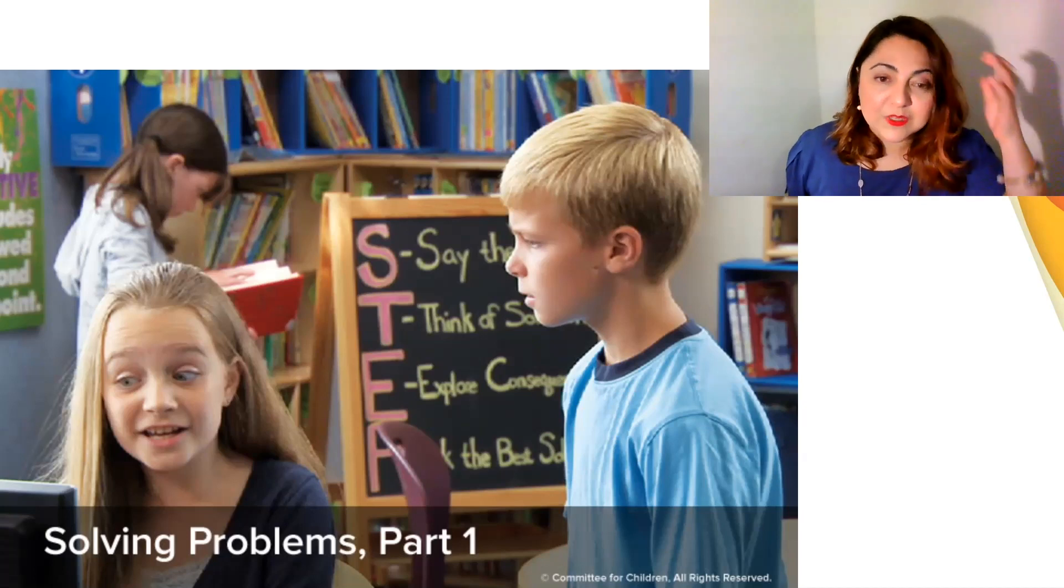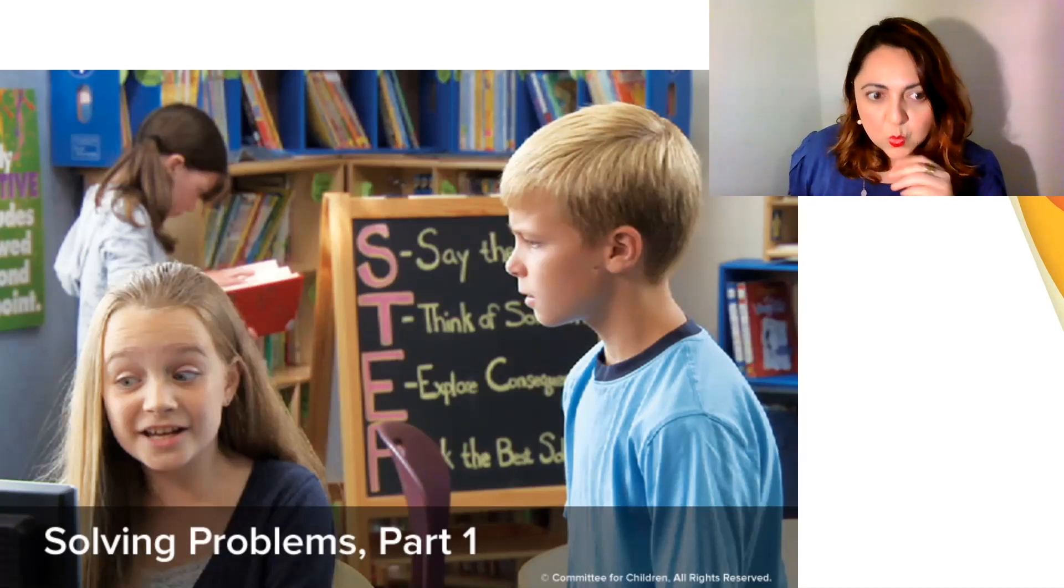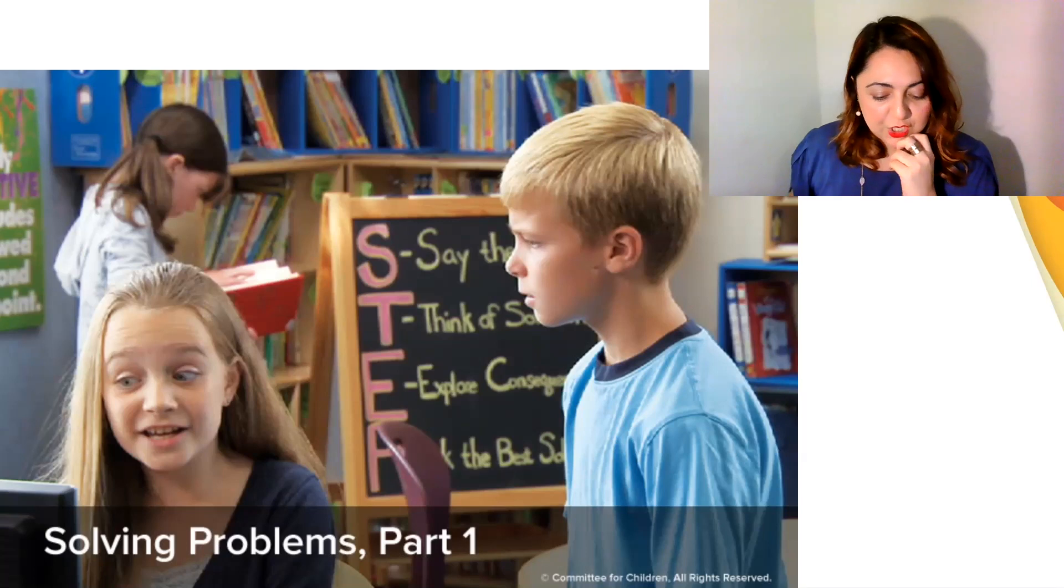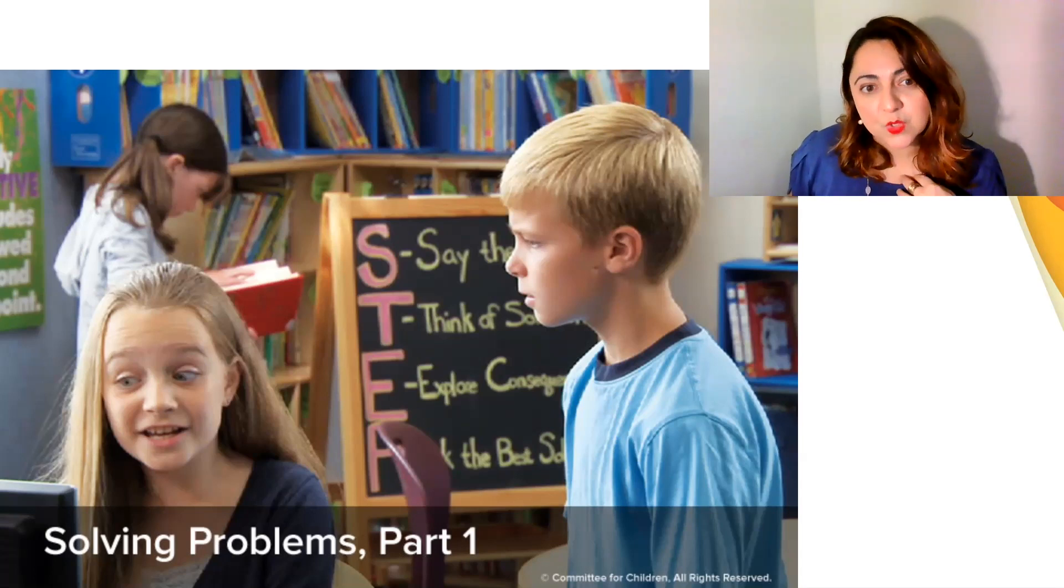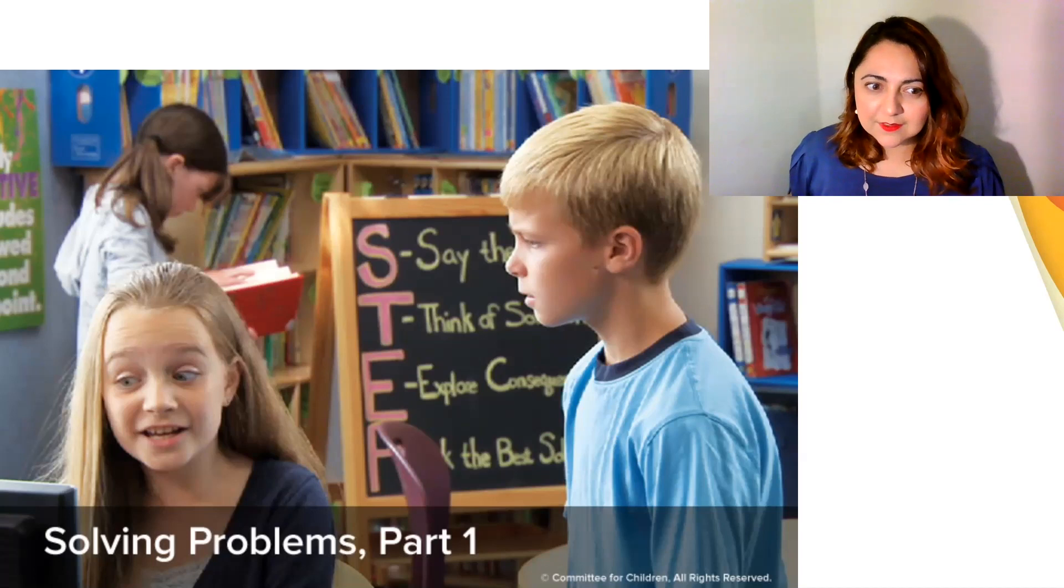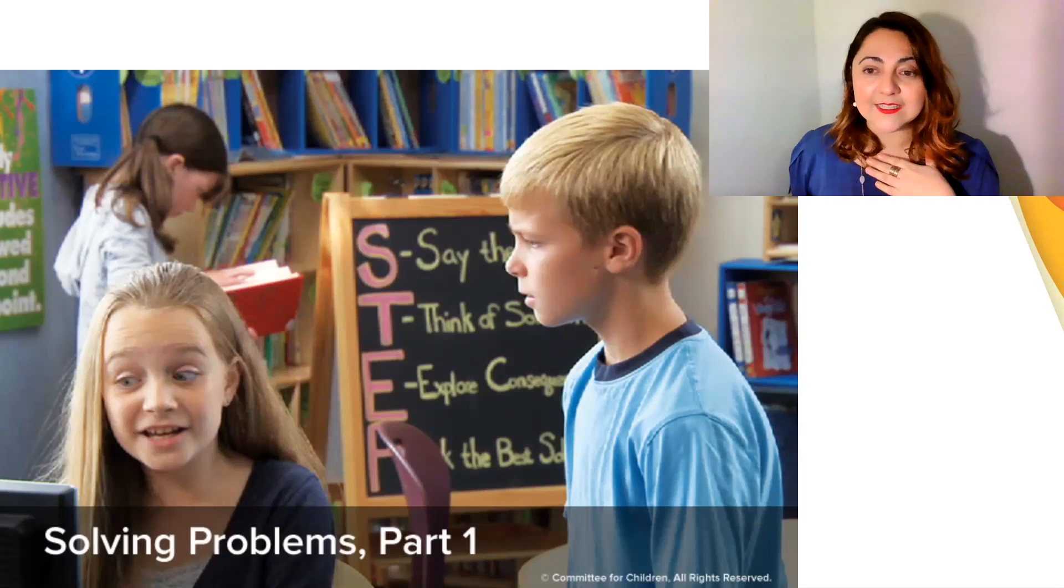When we state the problem, let's try to state the problem from Emma's point of view without blaming, without using James in the situation. Maybe Emma could say something like, my turn is up, but I want to keep using the computer so I can finish my report. That's a statement that is saying what is happening and what is her part in this problem.